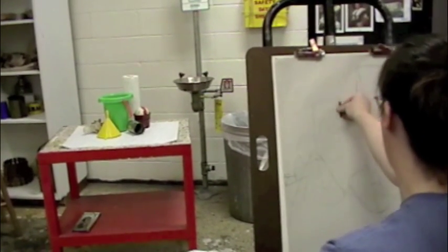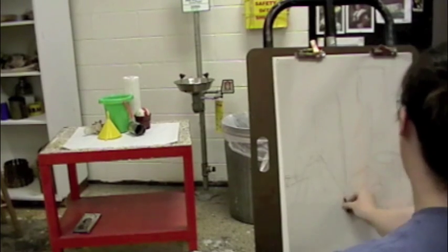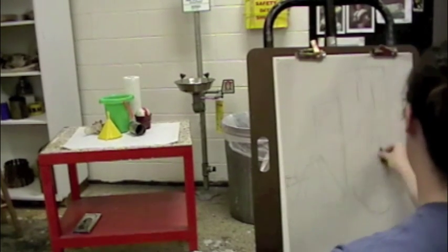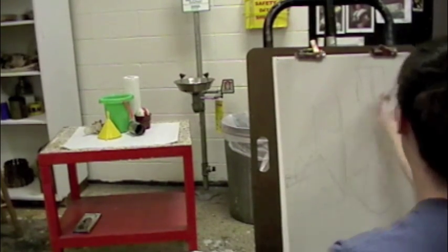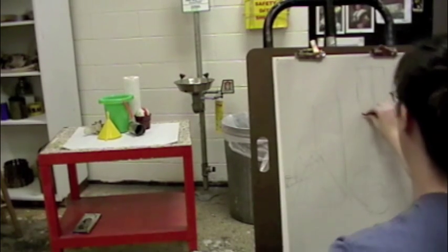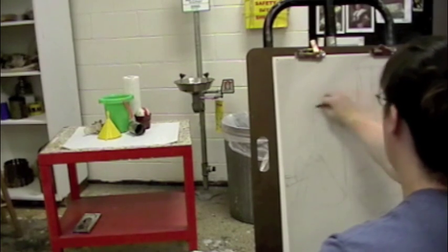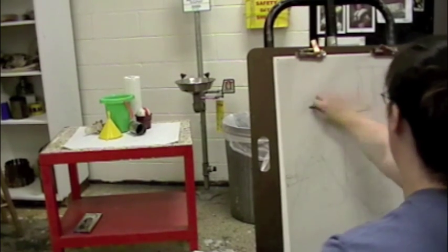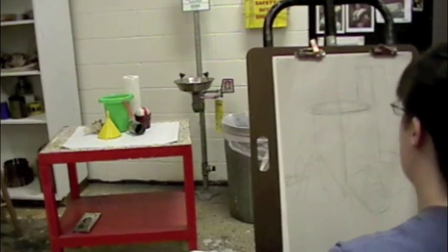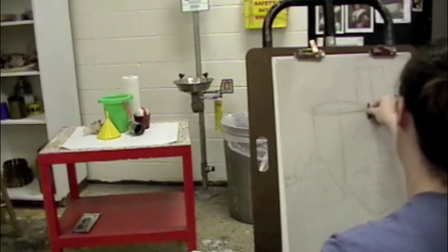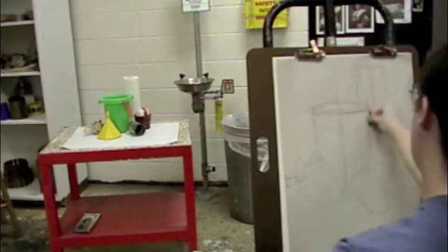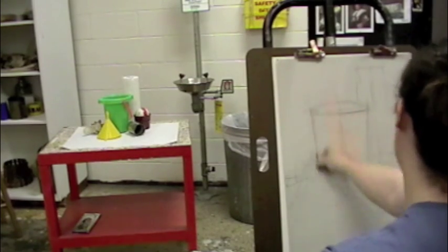So the very first thing we're going to talk about are axis lines. I draw an axis line for almost everything in my picture plane. This referring to my picture plane. Axis lines are also existing in ellipses, which is what I just drew. And the ellipses is just essentially a circle in perspective.